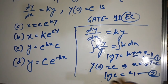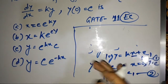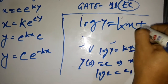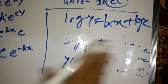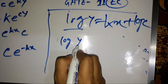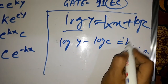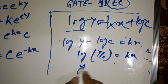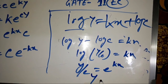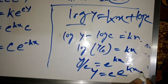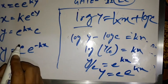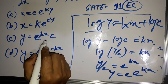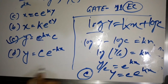अब equation 1 और 2 में c₁ की जगह value बिठाते हैं: log y = kx + log c। तो log y − log c = kx, और log(y/c) = kx। Log हटाने पर y/c = e^(kx), यानी y = c·e^(kx)। तो यही आपका सही आंसर है — option C।